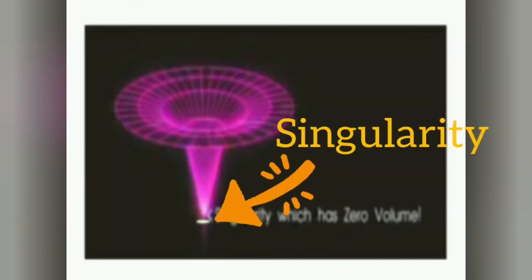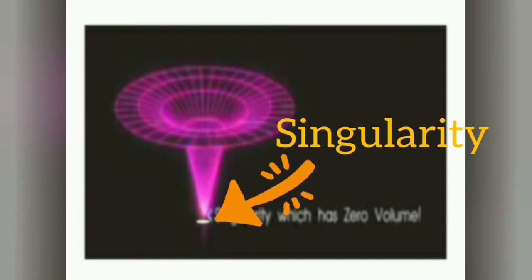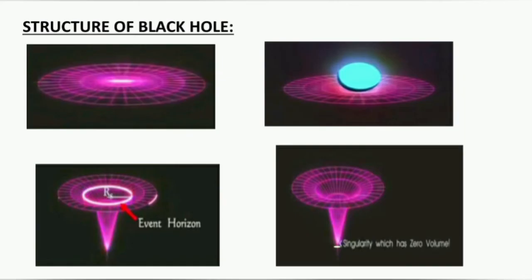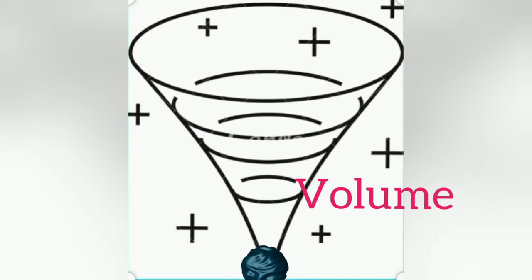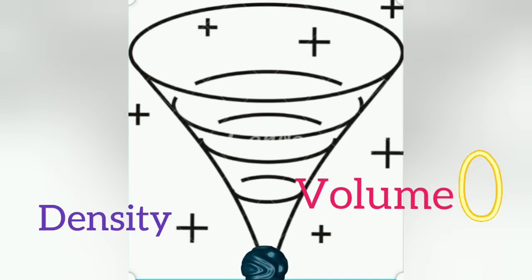The singularity is the central structure. The singularity has zero volume. As the star collapses, you can see that the volume becomes negligible — finally the singularity volume reaches zero.